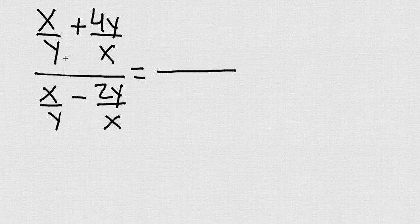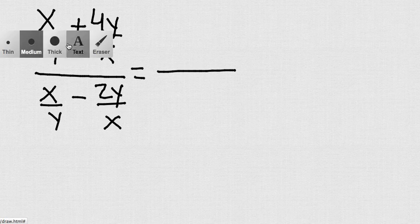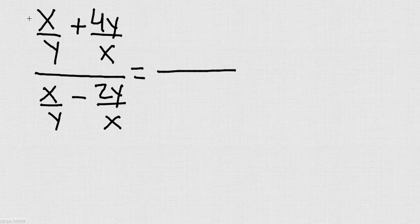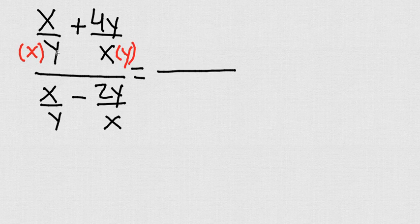The trick here is to do first the top and then the bottom, so let's do it. Now, I can see here I don't have the same denominator, so I cannot add these two fractions. So what I'm going to do is, and let me just change the color so you can see it, I'm going to multiply this by x and this by y because as you can see here, you're going to have now the same denominator.